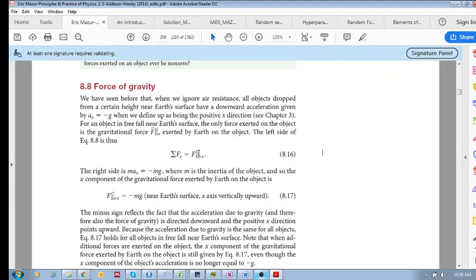Force of gravity, and it's the earth on the object. So that's the left hand side, sum of the forces. The right hand side is ma_x, but we know that a_x is minus g. So this becomes minus mg.